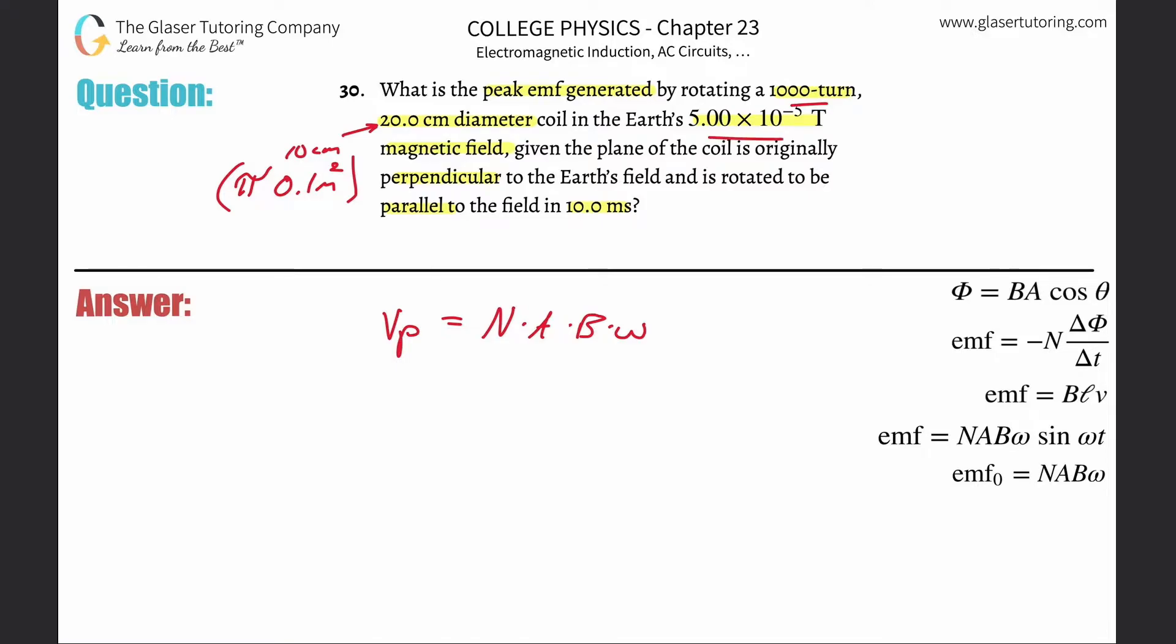The external magnetic field, they already told us, 5 times 10 to the minus 5th, so the question is, what in the world is the angular velocity? So what I need to do is focus on how to find that angular velocity.